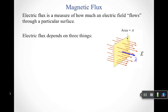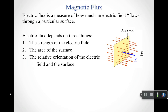If you remember when we talked about electric flux, we said it's a measure of how much an electric field flows through a particular surface. And we said that it depended on three things: one was the strength of the electric field, two was the area of the surface, and three was the relative orientation of the electric field in the surface. You could increase the electric flux by making your field stronger — that would be more field lines. You could increase your electric flux by making your area bigger — that would be more field lines. And you increase the electric flux by lining up your electric field and the area vector for your surface.